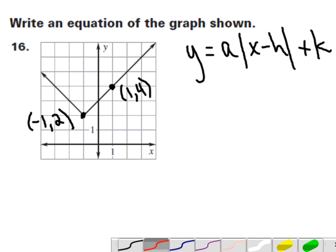In example number 16, we need to write the equation of the graph of the absolute value. The vertex is at negative 1, 2,